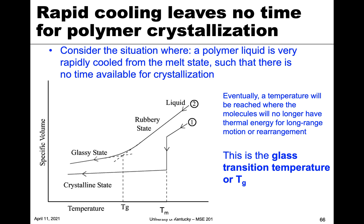We talked before with metals and ceramics about how we can get this glassy state, this amorphous behavior. Rapid cooling is one of those methods — if we rapidly cool the polymer, we leave no time for the crystallization process to occur. So that polymer liquid is rapidly cooled from the melt, leaving no time for crystallization, and you get a glassy state.